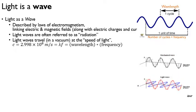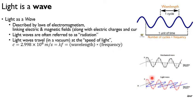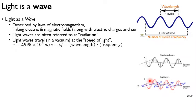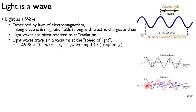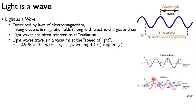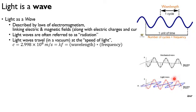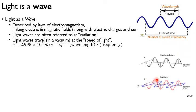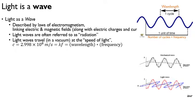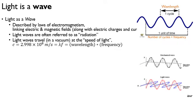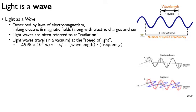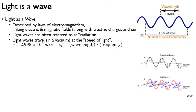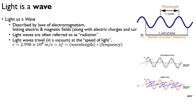Light waves are a bit more complicated. A light wave is actually oscillating electric and magnetic fields, and they are perpendicular to each other. Nonetheless, you can measure the distance between the peaks — that would be the wavelength. And you can measure how many peaks travel through a point per second — that would be your frequency.